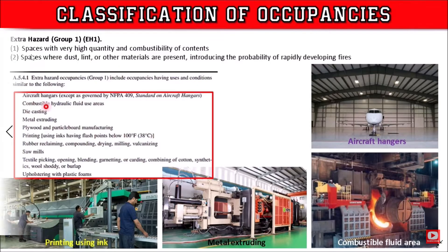Extra hazard group 1 is a space with very high quantity and combustibility of content, where dust, lint, and other materials are present, introducing the probability of rapidly developing fire. Extra hazard group 1 has a very high heat release rate.